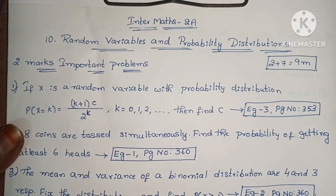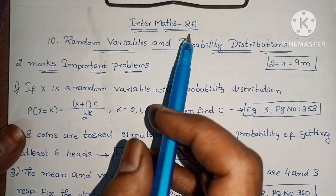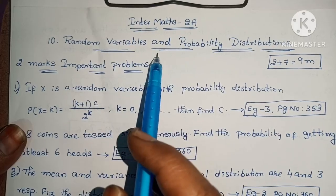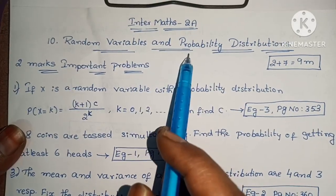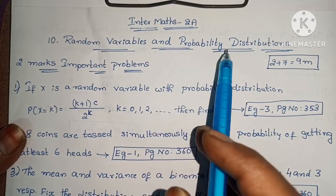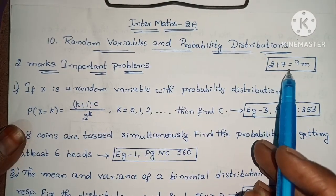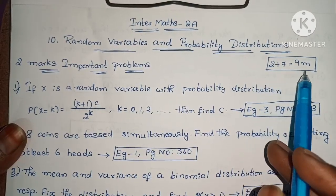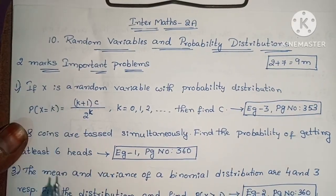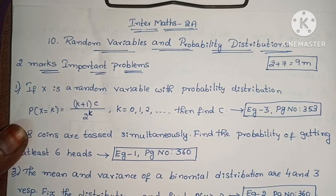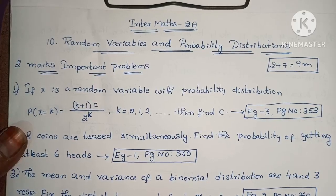Hi, welcome to Parneka Maths. In this video, we have the 10th chapter: Random Variables and Probability Distribution. This chapter is important to understand key problems. This chapter carries 9 marks. First, I have two marks important problems, and I have already explained the solutions.